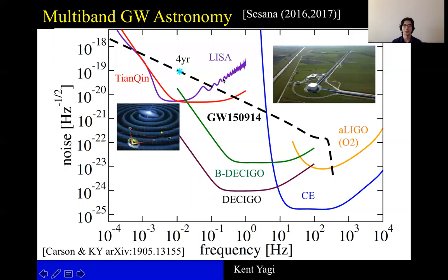The black dashed curve corresponds to the gravitational wave spectrum for GW150914, and notice that this spectrum lies above the LIGO noise curve, but also LISA noise curve.